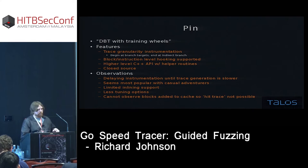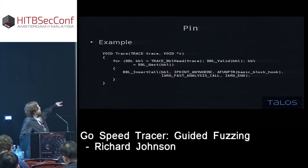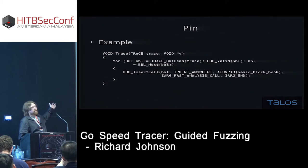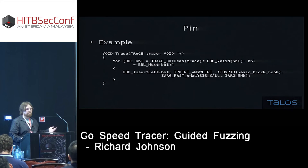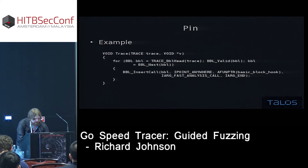Here's an example of how simple it is to get started with Pin. The trace function is just a callback — you register a callback at the beginning of your library saying you want to see every time a trace is created. Traces are generated whenever a back edge or indirect branch is taken. Then you walk the basic blocks on the trace, and for each basic block you insert a callback to an analysis function. That analysis function can do whatever you want — typically something to log the basic block execution.